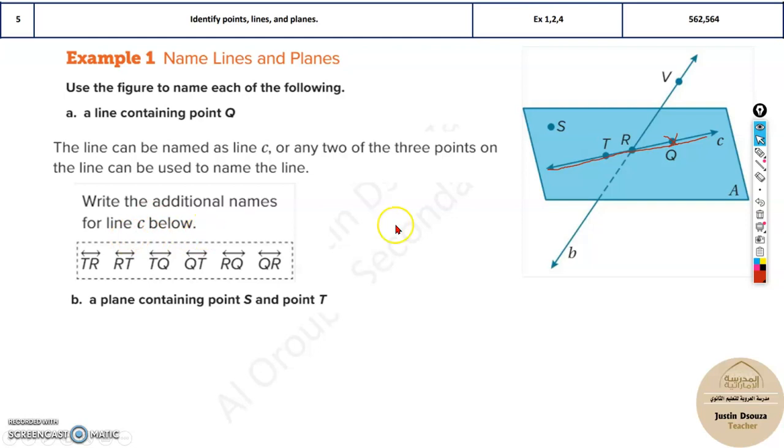Or you can write the additional names for line C. A line can be written using two points. Any two points on the line must be mentioned, and this symbol must be drawn to indicate it's a line, that means it extends forever. Over here you can see the two points can be TR or RT or TQ. So these are the other names for line C.